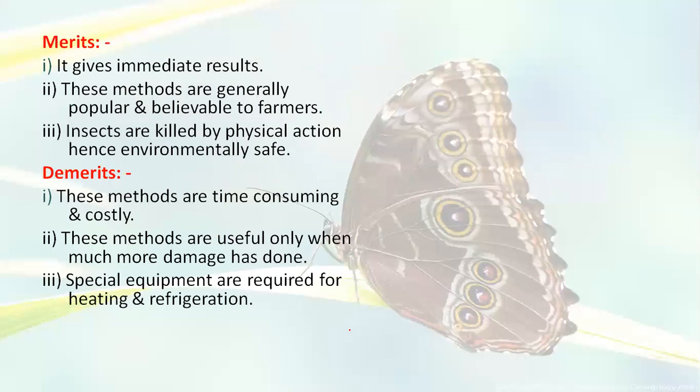The advantages of physical control are: firstly, it gives immediate results; these methods are generally very popular and reliable to farmers; and insects are killed by physical action, hence it is environmentally safe because no chemicals are used.